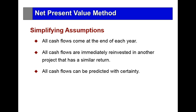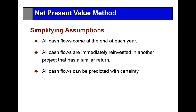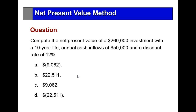We can make certain simplifying assumptions to make the job easier — for example, assuming cash flows happen at the end of the year and are immediately reinvested. We know that's not reality, but it's how we use these examples to determine the rate of return. For instance: compute the net present value of a $260,000 investment with a 10-year life, annual cash flows of $50,000, and a discount rate of 12%.